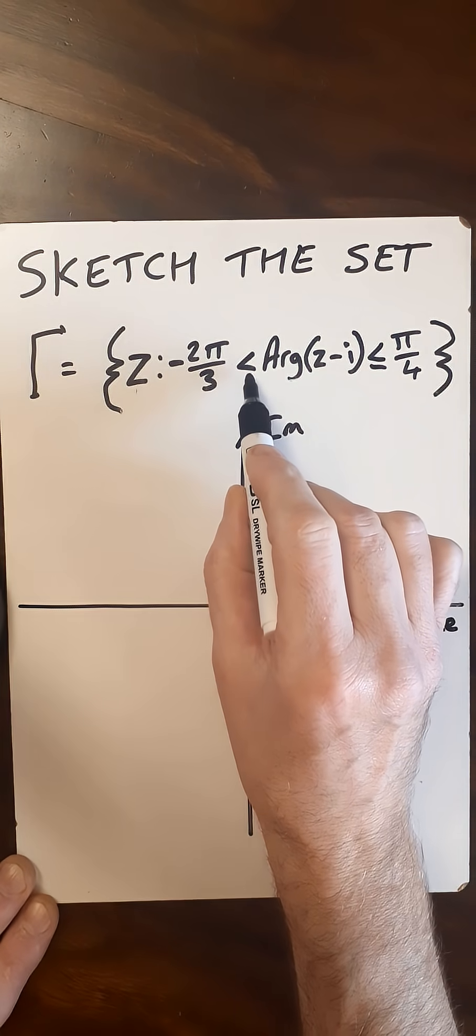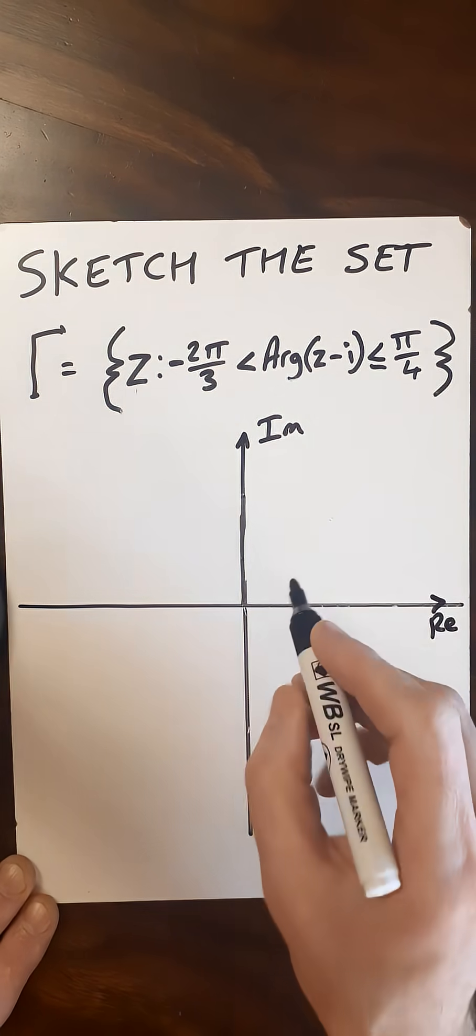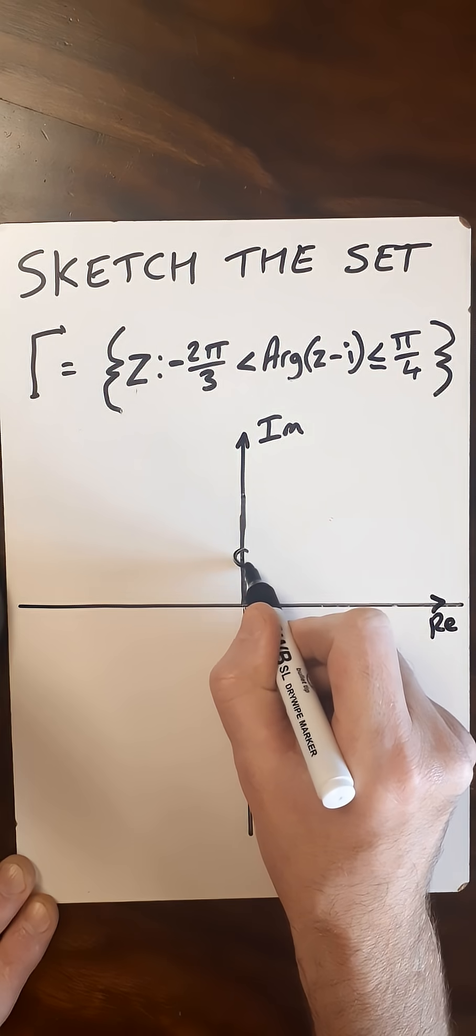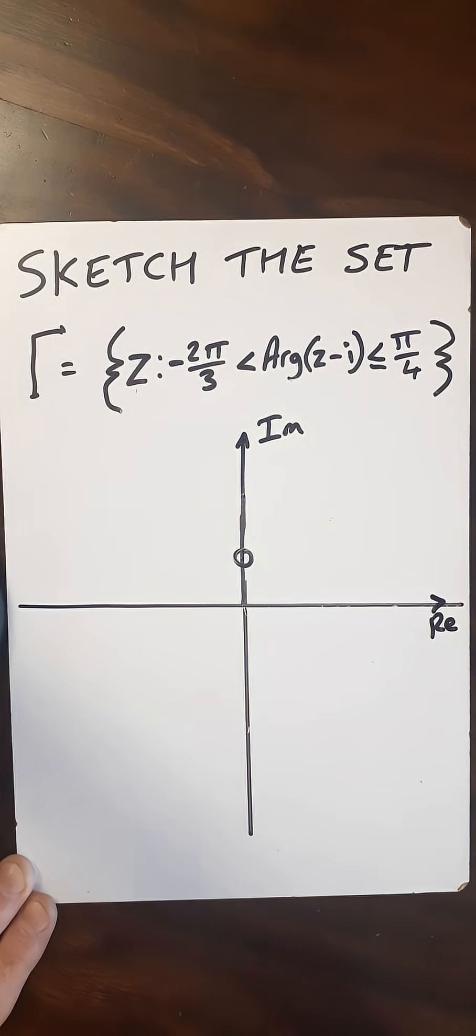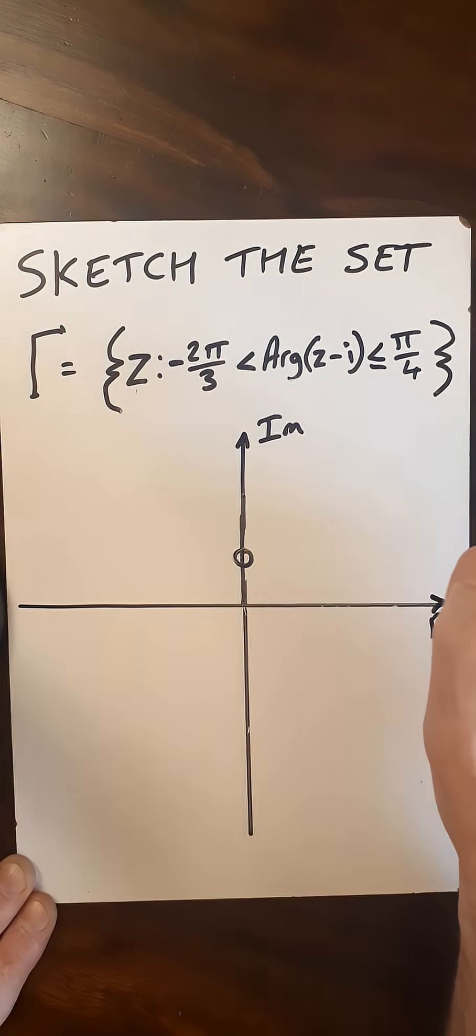Now as we've got a not equal to here, and an equal to here, we need a circle which is not filled in. So that will be our central point. And now we need to concentrate on the angles.